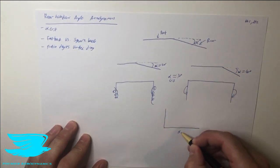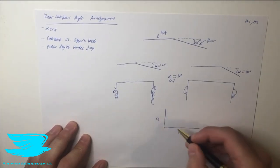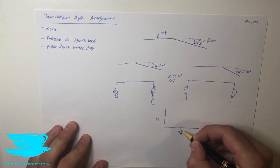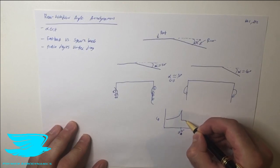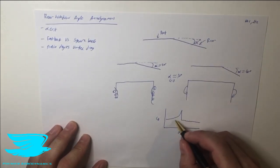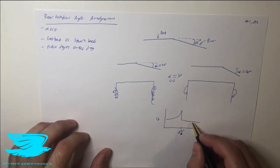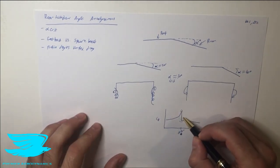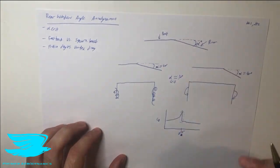If we plot the drag coefficient against the angle alpha, we see that as we increase the angle up to the critical angle, drag starts to increase and then drops dramatically before tapering off. The exact levels on either side of the drop depend on the car, but what's important is this sharp drop.